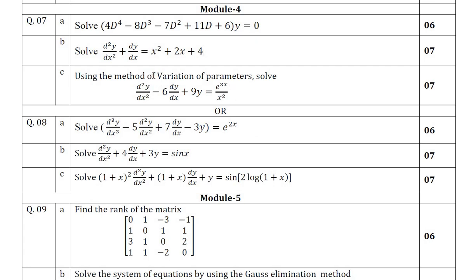There is a chance of asking variation of parameters, and there is a chance of asking Cauchy and Legendre. Here they have asked Legendre differential equation. Instead of this, there is a chance of asking Cauchy. If you saw the previous paper, in paper one they have asked Cauchy differential equation. Either of this way they can ask in module 4. Which is comfortable to you, you can choose that and answer properly.